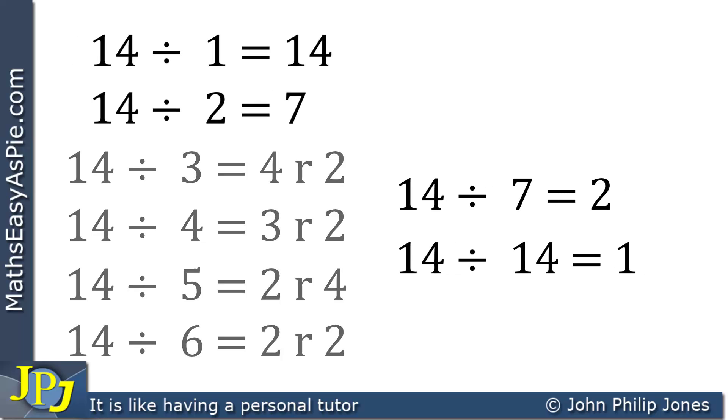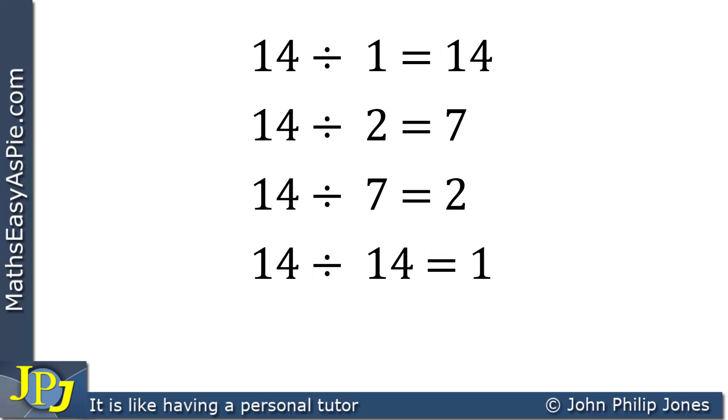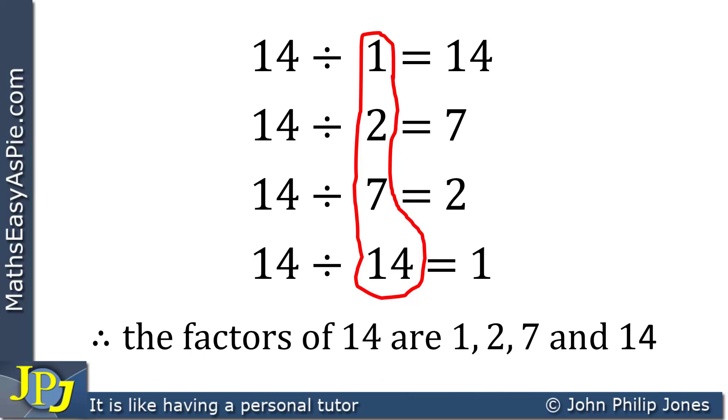I will now group all of the divisions that went exactly. And we can see that these are the factors of 14. Therefore, the factors of 14 are 1, 2, 7, and 14.